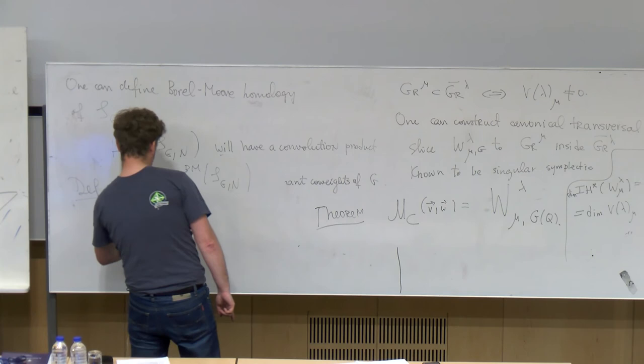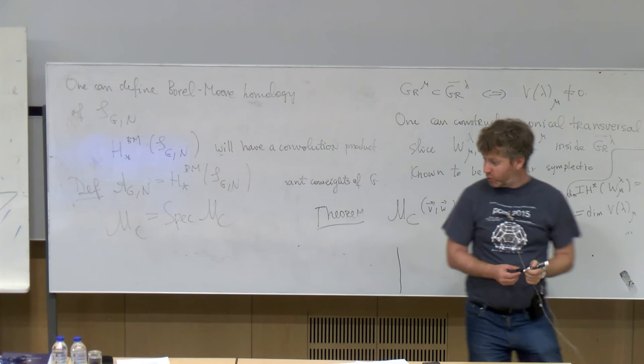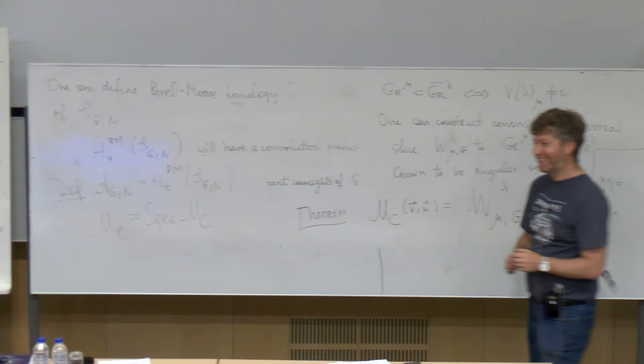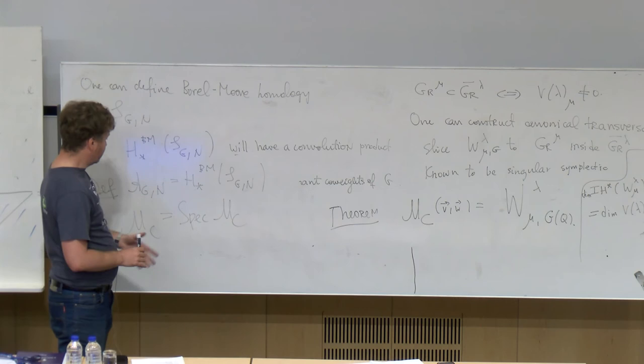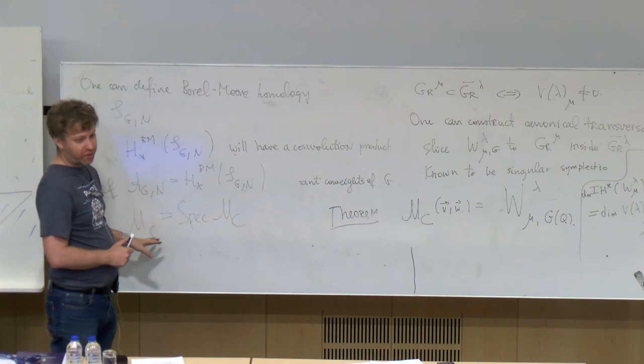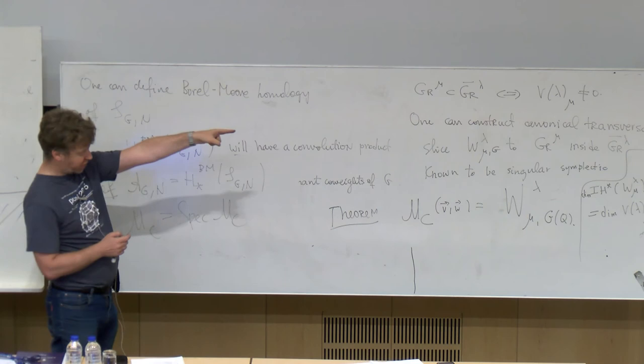The end is: one can define the Borel-Moore homology of this stack S(G,N). Things are a little bit infinite-dimensional here but not terribly so. H-star Borel-Moore of S(G,N) will have a multiplication — a generalization of convolution — and we define A(G,N) to be this Borel-Moore homology. MC is its spectrum. One can prove that in general this algebra is always finitely generated, the corresponding MC is always a normal variety, and it comes with a canonical quantization from considering things equivariant with respect to loop rotation.